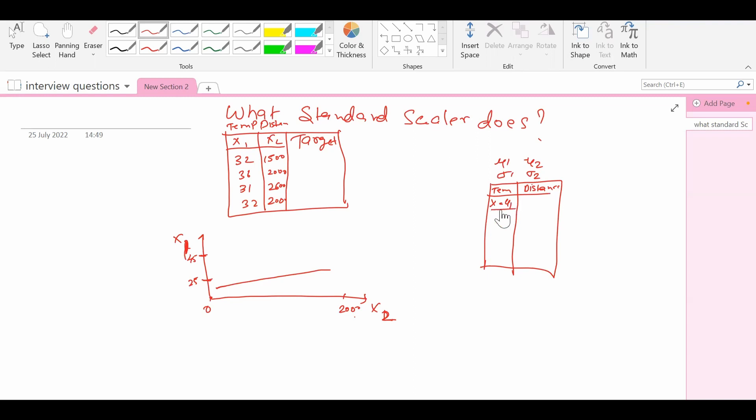And it takes each and every individual element from let's say this temperature column and subtracts the column's mean and divides by the standard deviation of the column. So it does it for each and every point present in this dataset. For distance, it will subtract the mean value of distance from that point and divide by the standard deviation, and so it does for all the points that are present.